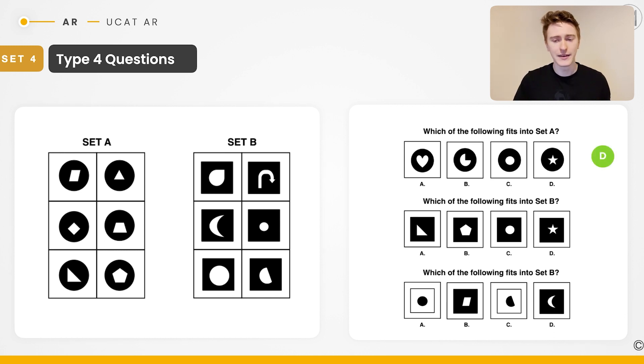If we then move on to the next one, which of the following fits into set B? We're looking for a shape with a black square, being the bigger shape, and then an inner shape which is curved. Which one fits that? It's answer number C.